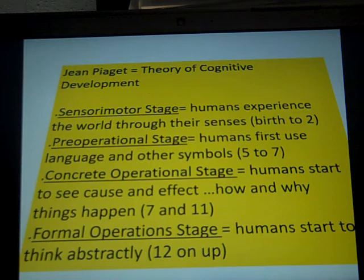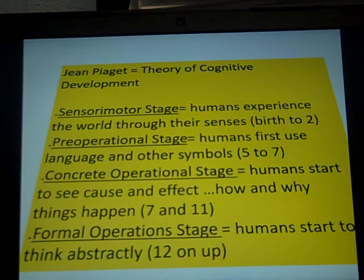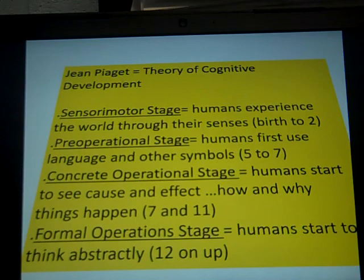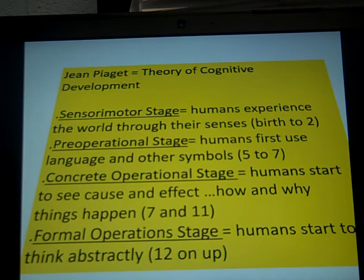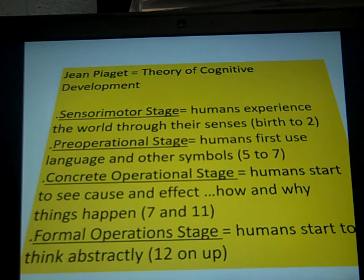The preoperational stage, from ages two to seven, is when humans first use language and other symbols. Young kids are starting to understand language and the use of symbols — for example, holding up their hands to say 'wait,' or holding out their arms to give or receive a hug. The concrete operational stage is when humans start to actually see cause and effect — a higher level of cognitive processing, understanding how and why. The formal operational stage, from age twelve and up, is when people start to think abstractly — understanding rules and norms in society but also thinking independently. Personality develops along with these cognitive stages, and can only develop to the point where cognitive abilities develop.